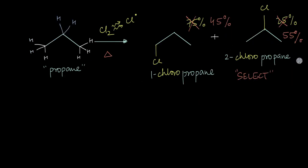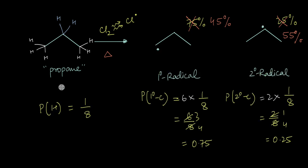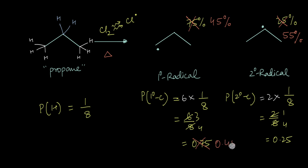If the products are 45% and 55%, then the first-degree and second-degree radicals formed must also be 45% and 55% respectively. So in reality, the probability of forming a first-degree radical is not 0.75 but 0.45, and the probability of forming a second-degree radical is not 0.25 but 0.55.